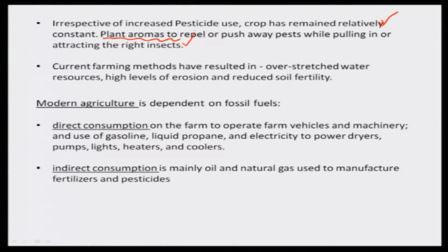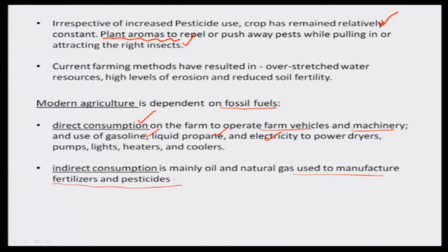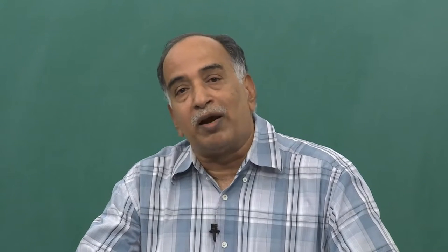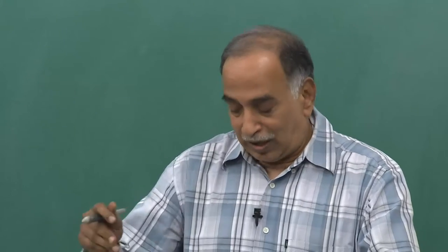Modern agriculture uses fossil fuels. The direct consumption is for farm vehicles and machinery — gasoline, liquid propane, and electricity. The indirect consumption is for the manufacture of fertilizers and pesticides. The impact of this is on climate change, as CO2 emissions increase and alter weather conditions.